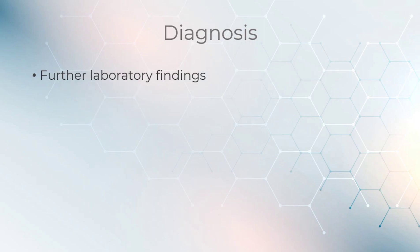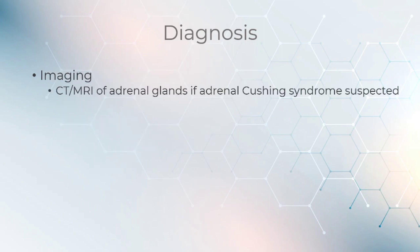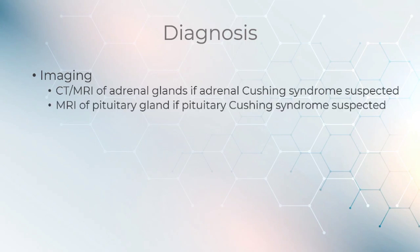Further laboratory findings include hypokalemia, hypochloremia, hyperglycemia, hypercholesterolemia, and metabolic alkalosis. Regarding imaging, CT or MRI of the adrenal glands is indicated if adrenal Cushing syndrome is suspected, and an MRI of the pituitary gland is indicated if pituitary Cushing syndrome is suspected.